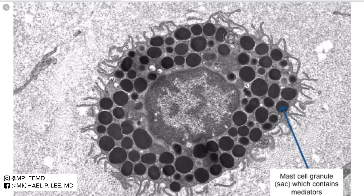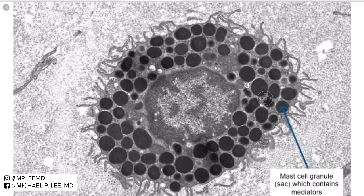Here you have an electron microscope image — a photomicrograph of a mast cell — showing central nuclei and multiple granules containing both heparin and histamine.